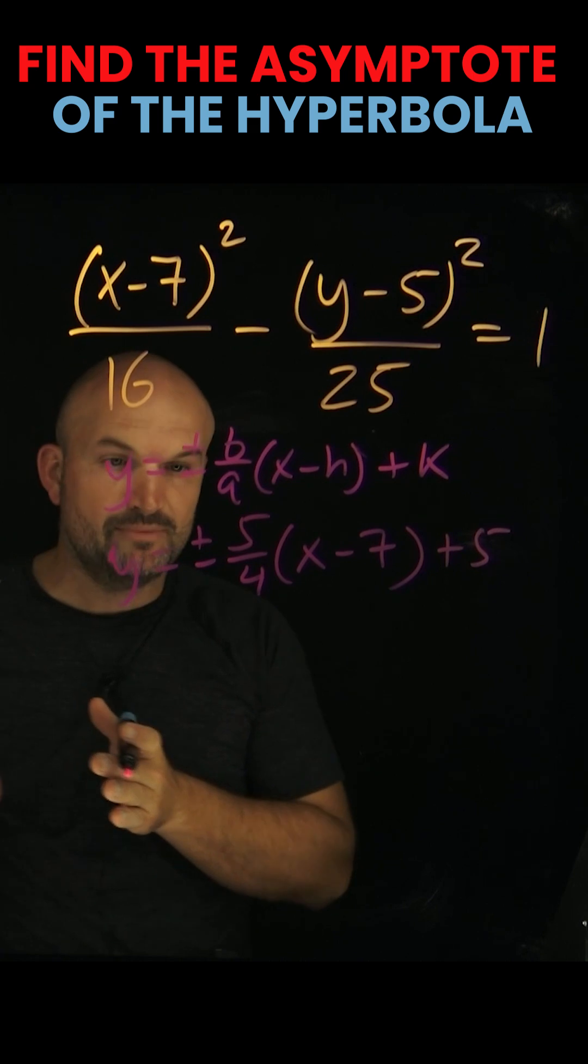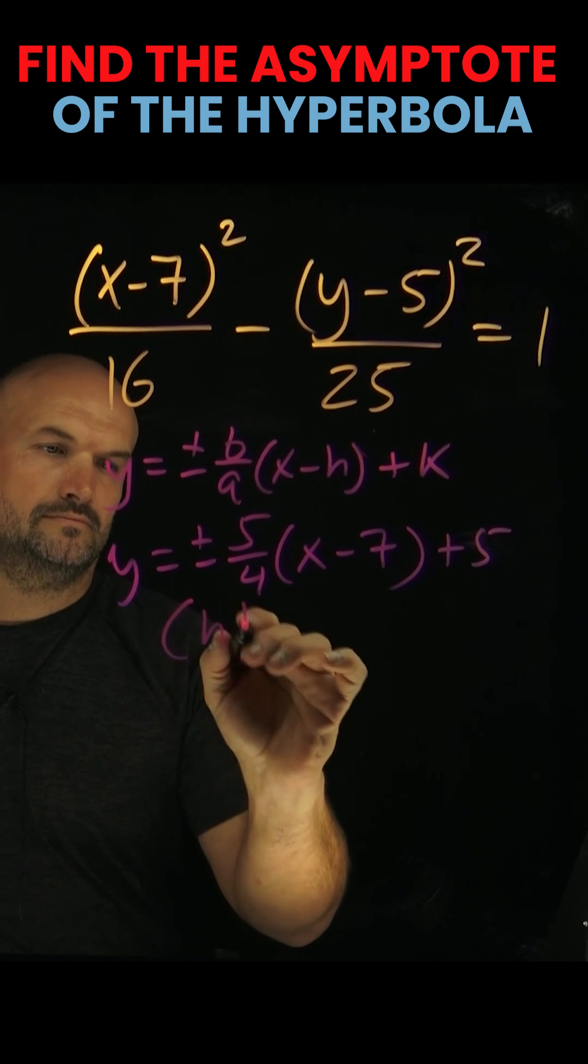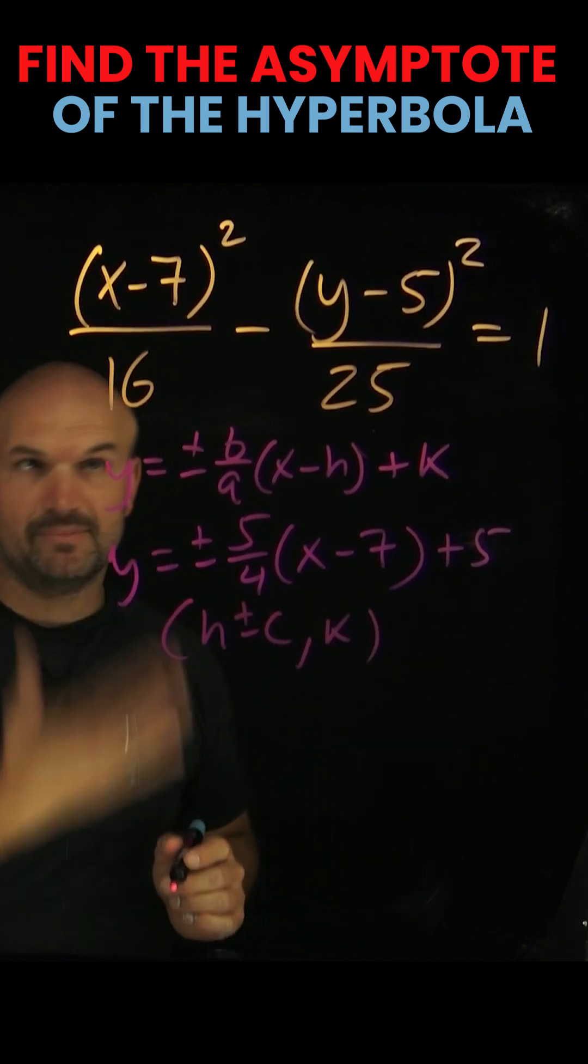Now the foci of a horizontal hyperbola is going to be my vertex plus or minus horizontally, going to be my value of c. Okay, so I got to be able to find my c.